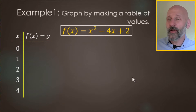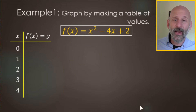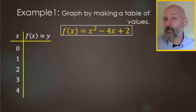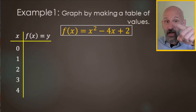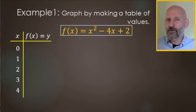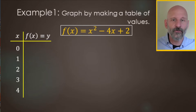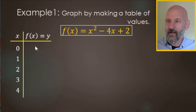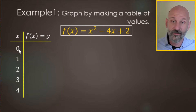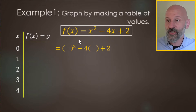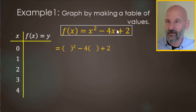For this example, we're going to be graphing a quadratic using a table of values. This will make a parabola, which is a U shape. You can use a table of values on quadratics, lines, square root functions — any of them. For the first blank, we're going to use zero for x as the input to find the corresponding y value.